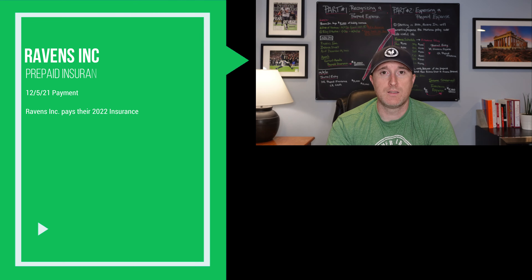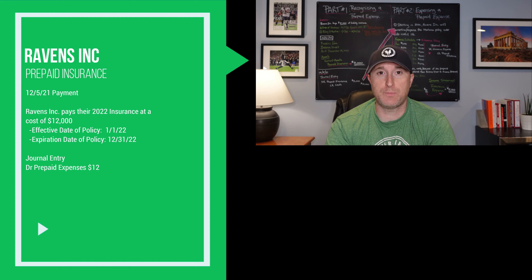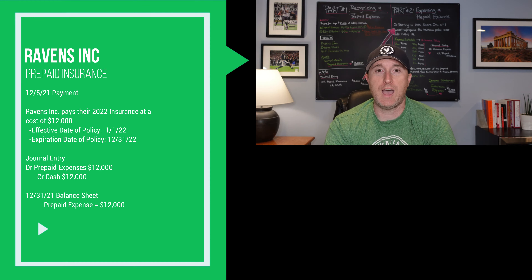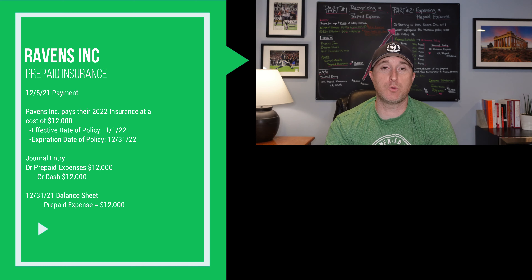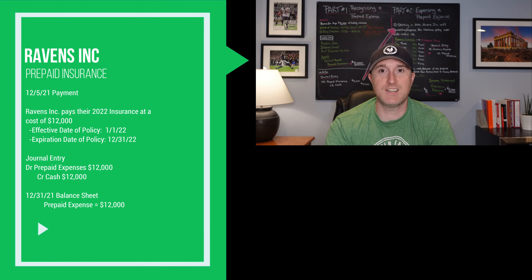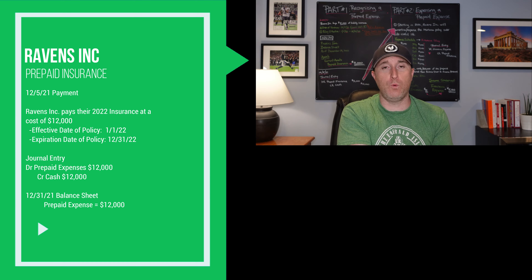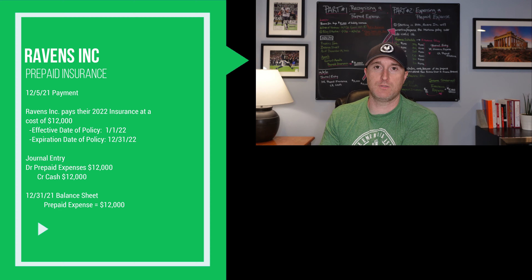Let's pick up our example of Ravens Incorporated. To recap: Ravens Incorporated purchased a liability insurance policy on December 5th, 2021, with an effective date of January 1st, 2022 to December 31st, 2022. As of December 31st, 2021, that $12,000 prepaid insurance is sitting on our balance sheet and not our income statement. This training is going to take what's sitting on the balance sheet and move it over to the income statement.